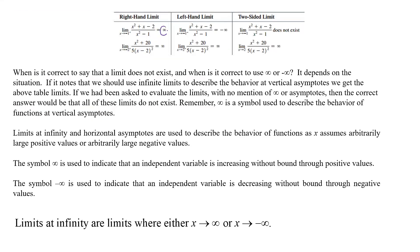When we do this, we get positive infinity on the right, and negative infinity on the left. Now to get a two-sided limit, the right and left limits have to be equal. Since those two are not equal in this case, the two-sided limit does not exist for this example. If we look at our second example, coming from the right and from the left, both are equal to positive infinity. Therefore, the two-sided limit is equal to positive infinity.